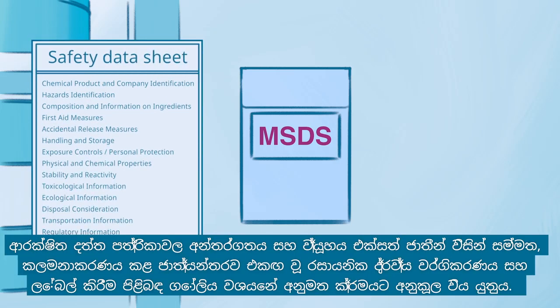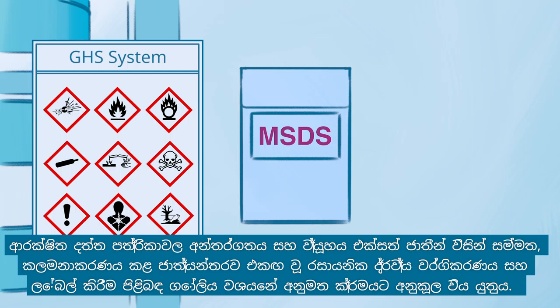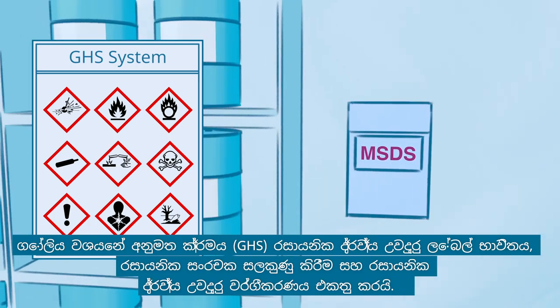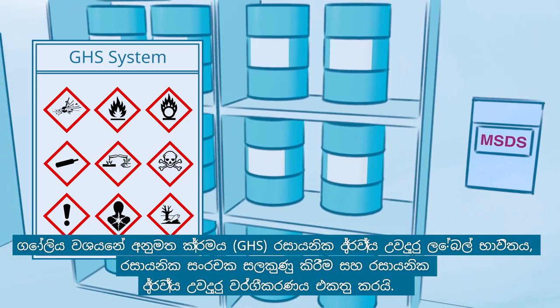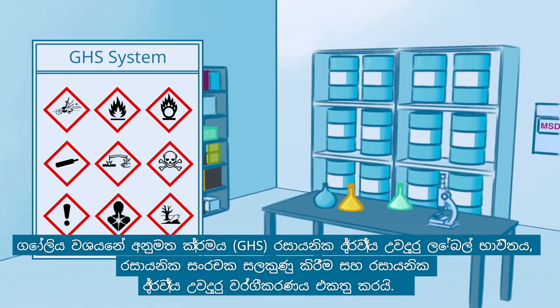The content and structure of safety data sheets should be in line with the Globally Harmonized System of Classification and Labeling of Chemicals, which is an internationally agreed upon standard managed by the United Nations. The GHS system also harmonizes the use of chemical hazard labels, markings for chemical containers, and the chemical hazard classification.